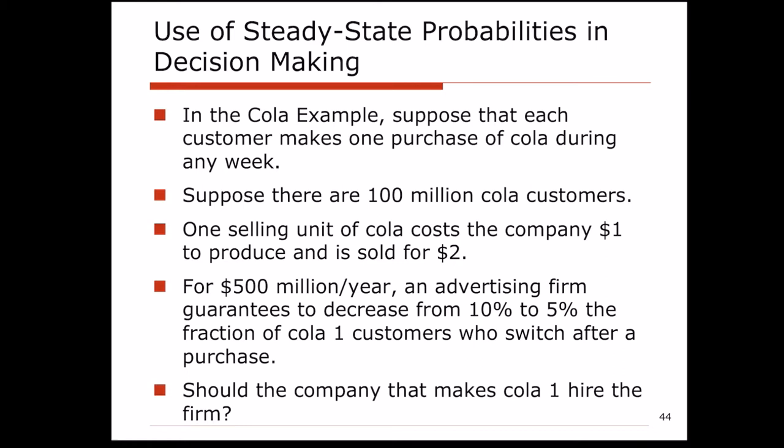In the first example, we are going to go back to the cola example case. We had two colas — cola 1 and cola 2 — produced by two companies. Let's assume there are 100 million customers, and these customers buy one cola every week. For each cola, there is a $1 cost and $2 revenue associated with that cola.